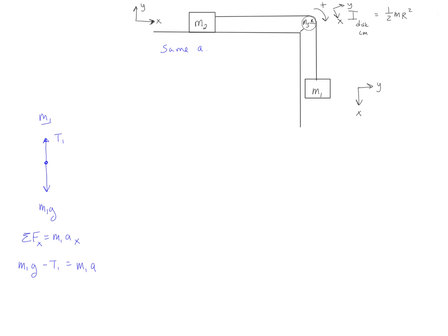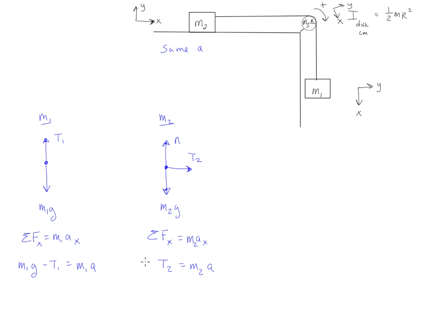Now let's look at what's going on with M2. M2 still has the force of gravity M2g, a normal force of the table pushing upwards, and a tension T2 pulling to the right. In the y-direction, the normal force balances with M2g, so I'm only going to look at the x-direction. The sum of the forces in the x-direction equals ma, so that would just be T2 = M2 times a. And this acceleration is the same as M1's acceleration.